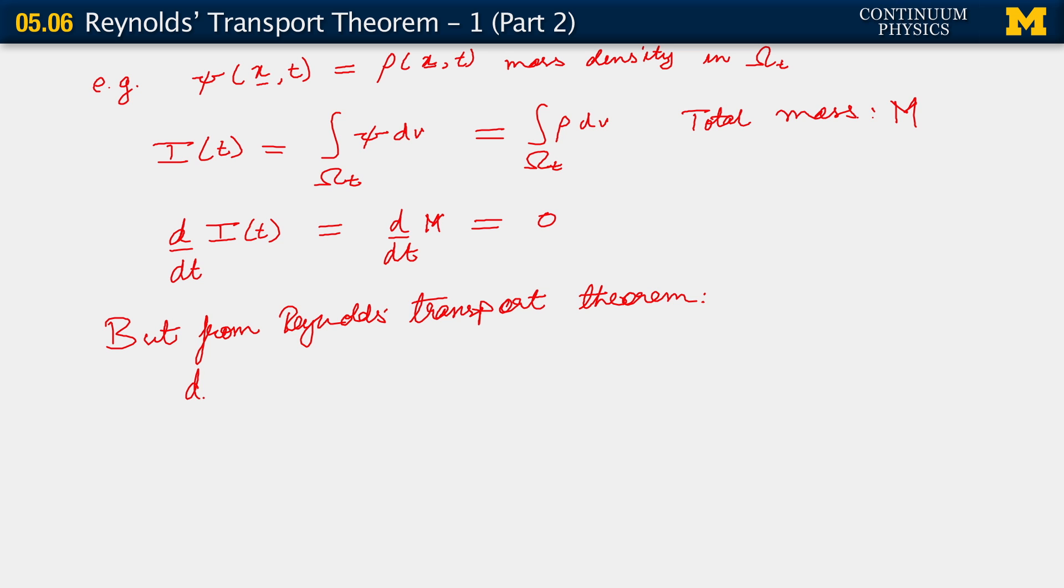But from Reynolds transport theorem, what we see is that d/dt of M is now integral over omega t of the partial time derivative plus the divergence of rho v.